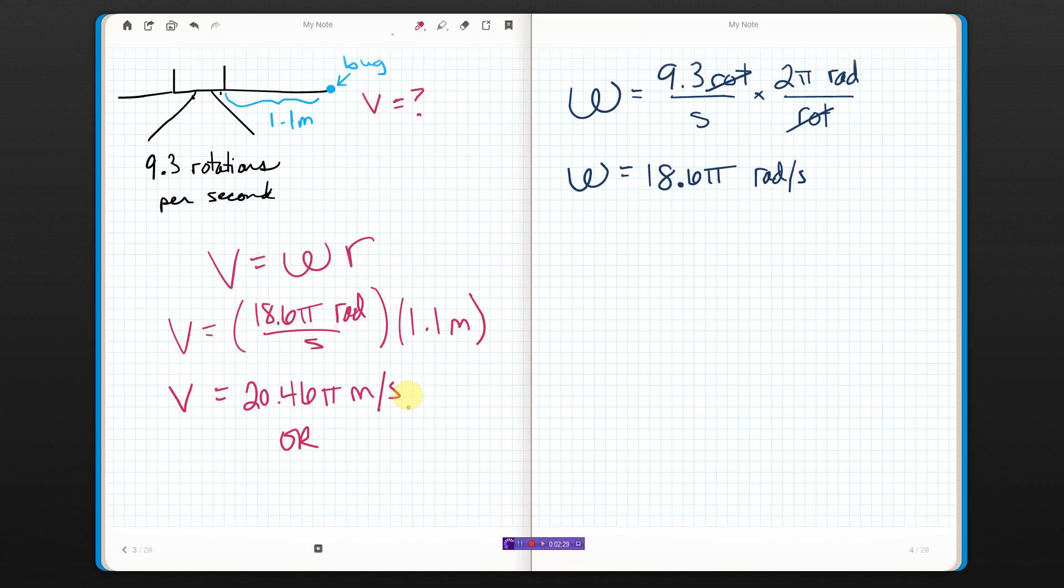Or, if you don't want to leave pi in there, I'm just going to type times pi on my calculator. 64.3 meters per second.